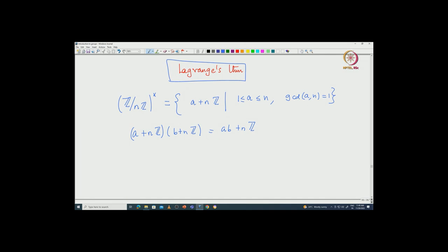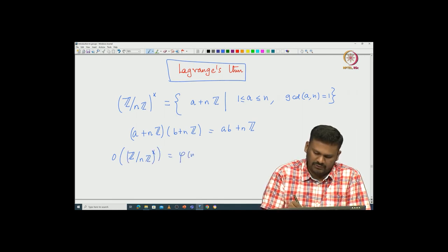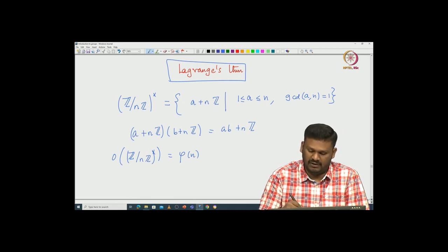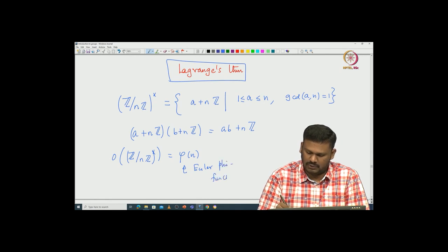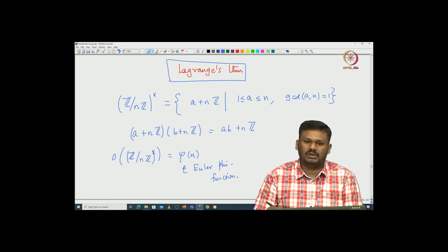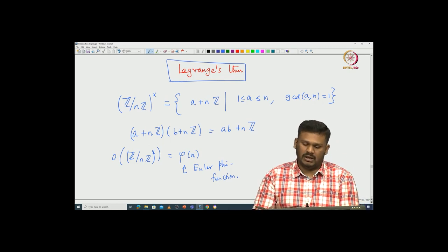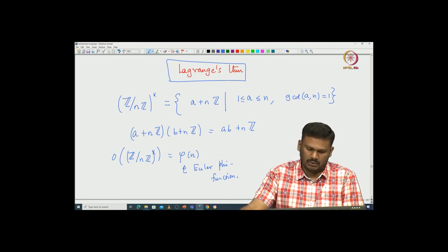We have already seen that the number of elements, or the order, of ℤ modulo nℤ cross is going to be exactly φ(n). This is the Euler phi function, and we know how to compute this — I have already told you how to compute all this.